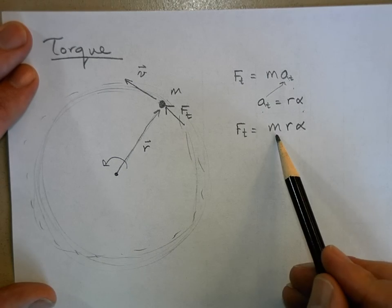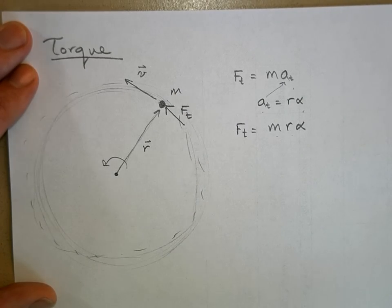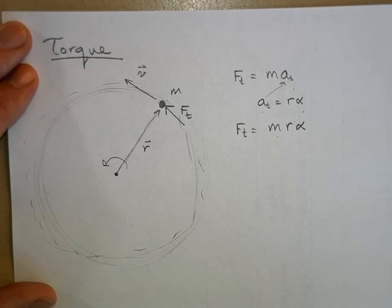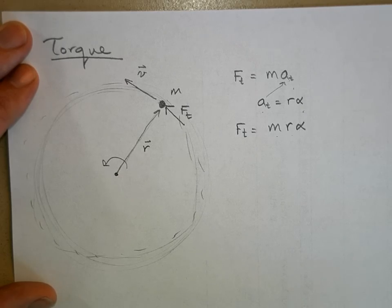Look at what I've got here — m times r. Hmm, m times r... what have I got that has an m and an r in it? We were just talking about it: rotational inertia, or moment of inertia. But it wasn't m times r — it was m times r squared.